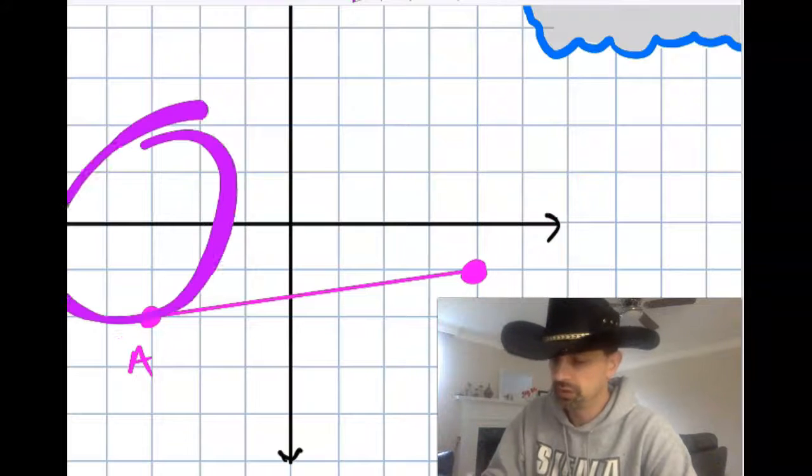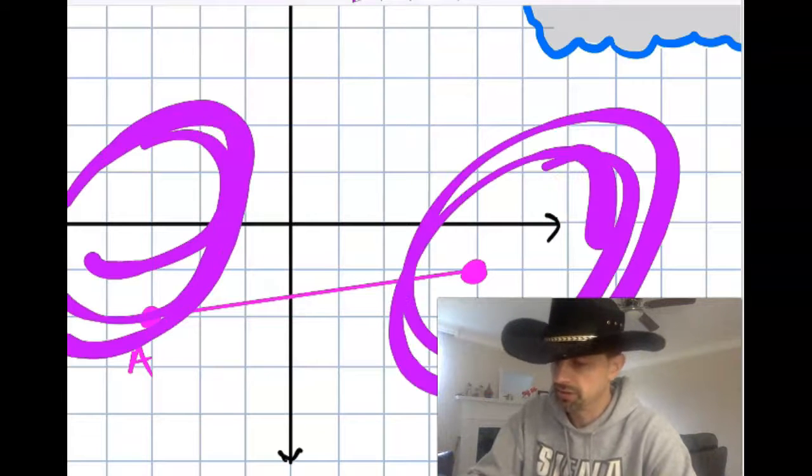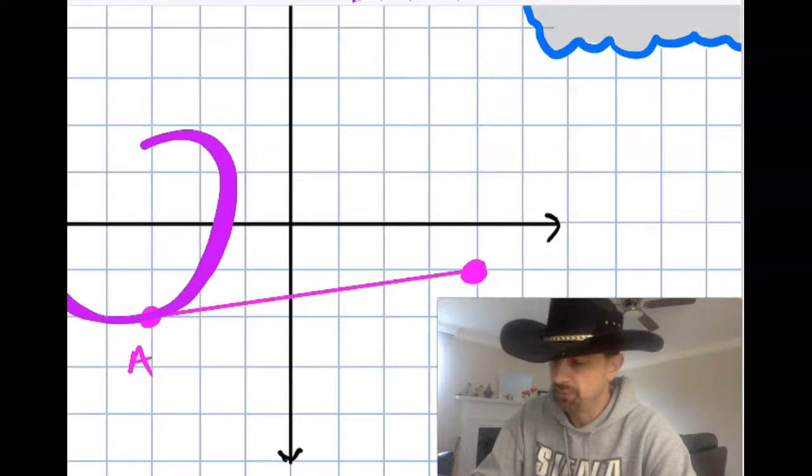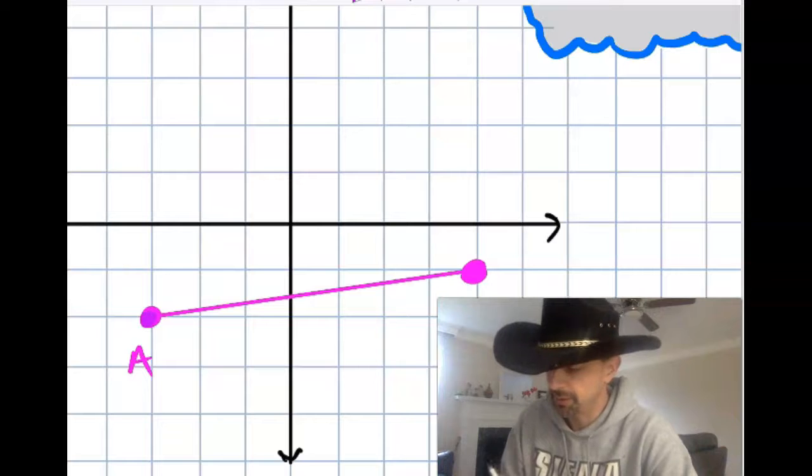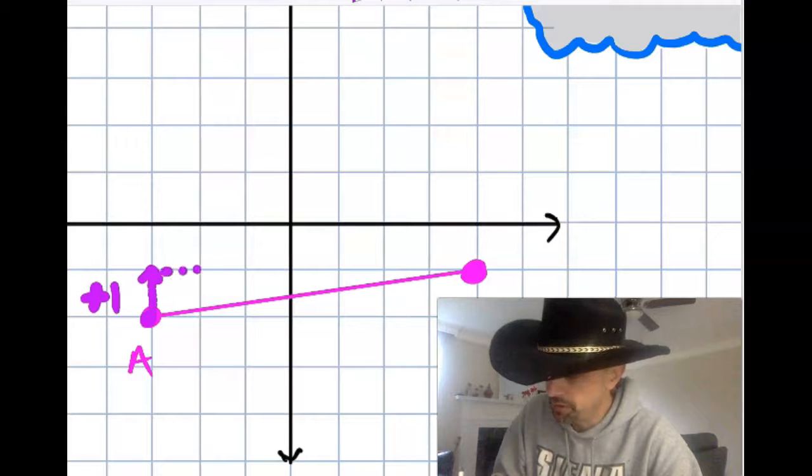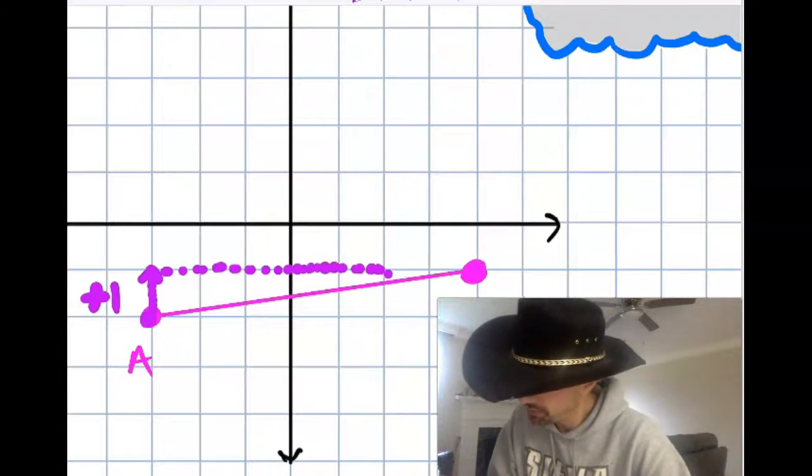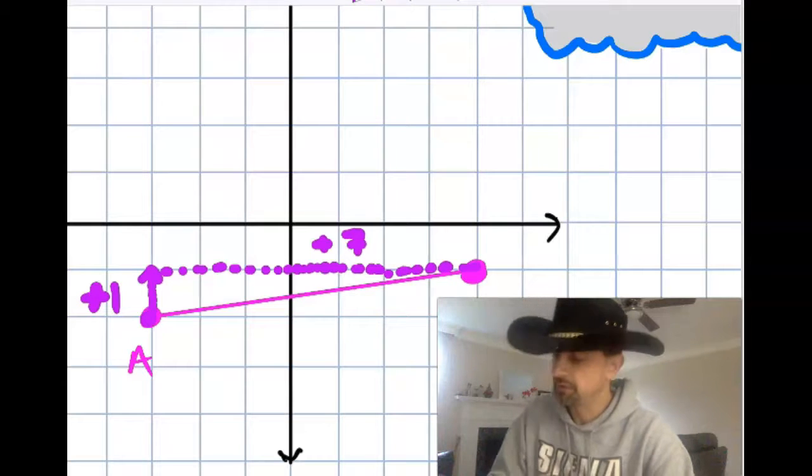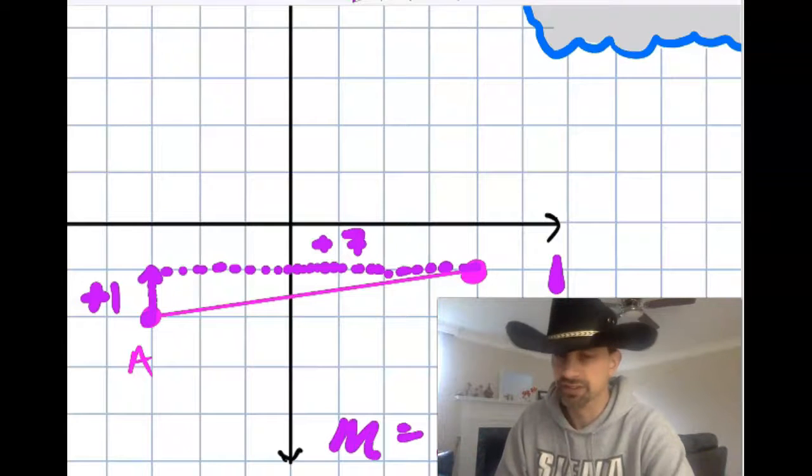So you're always starting over here and ending up over here. So my leftmost point is right here. To get to the other point, I have to go up 1 and over 7. So positive 1, positive 7. So the slope is 1 seventh.